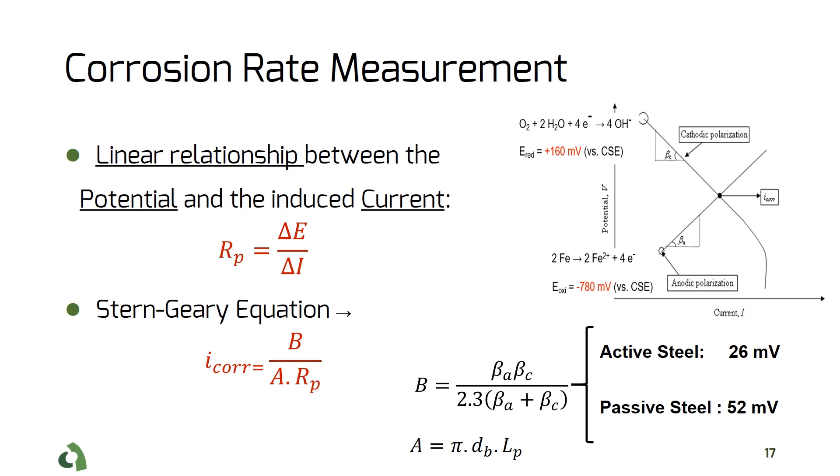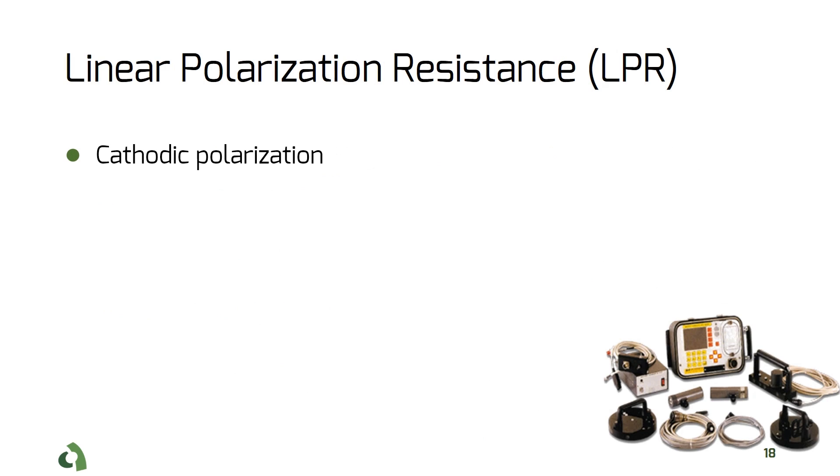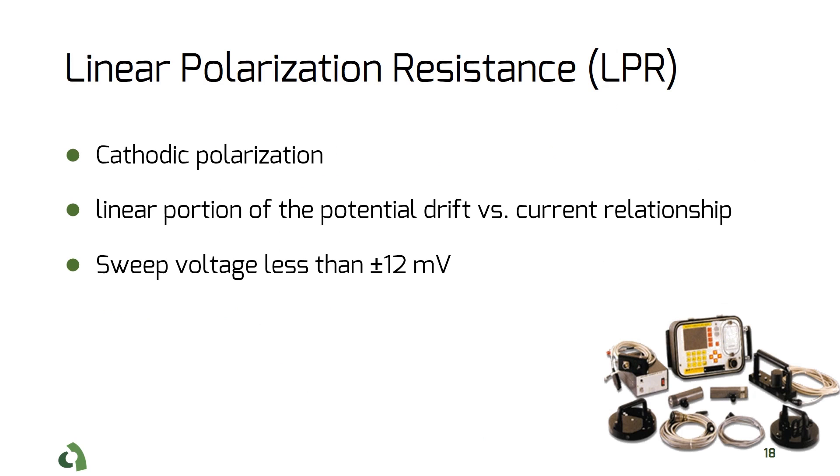The first is a potentiostatic sweep, in which voltage is increased with a constant sweep rate, and the response current is recorded. The second is a galvanostatic sweep, in which the current is increased with a constant sweep rate, and the response potential is recorded.